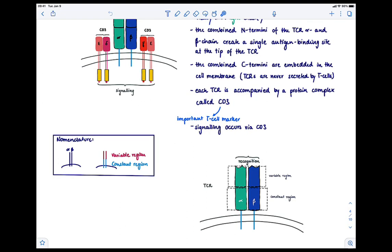That's all I wanted to say about CD3. Now I just want to mention again, in terms of nomenclature, we have an alpha and a beta domain—a heterodimer—and we can split them up into the variable region and the constant region.